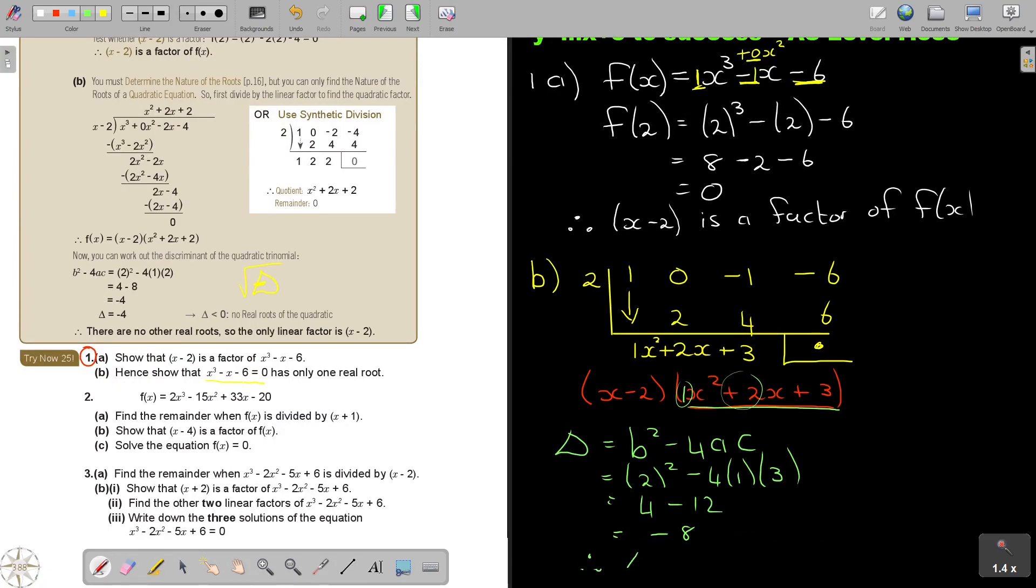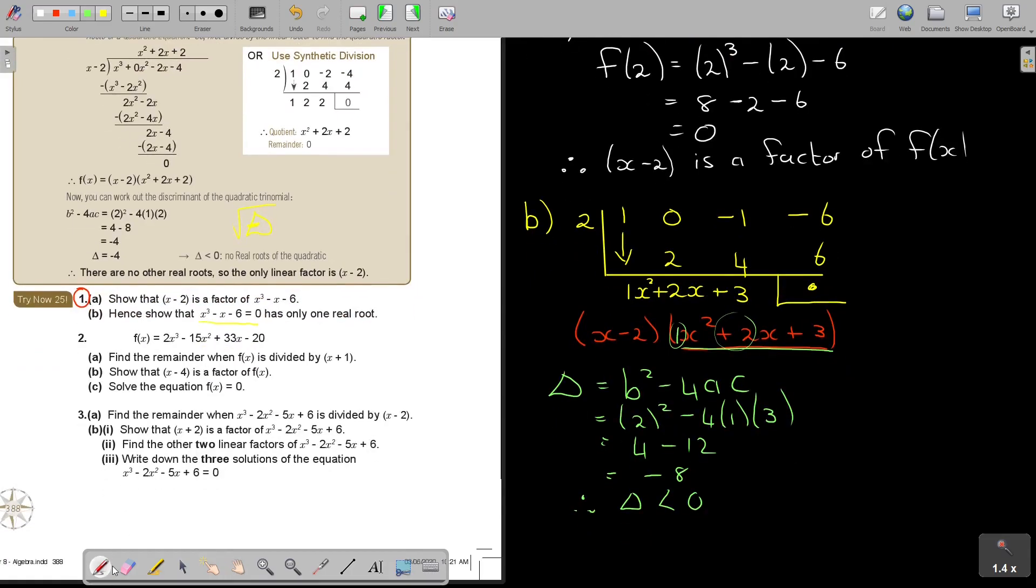That is going to be -8. So therefore, the discriminant is smaller than 0. We end up with saying there are no other real roots. So remember, this one is real. This one is not real. I'll show you now how that sketch looks. Now, there are no other real roots, so the only linear factor is x minus 2.